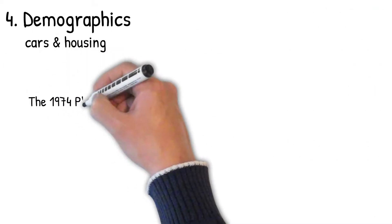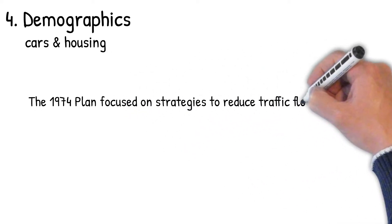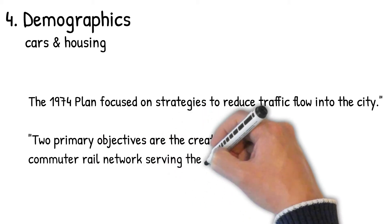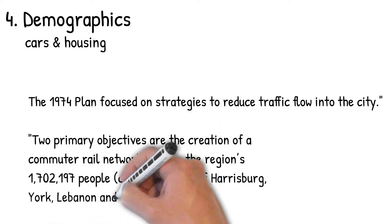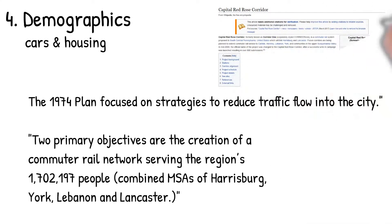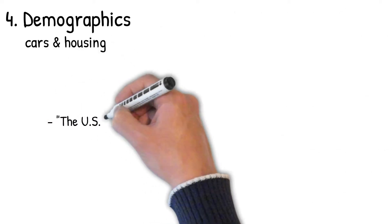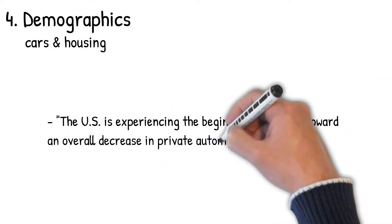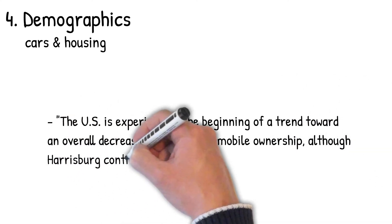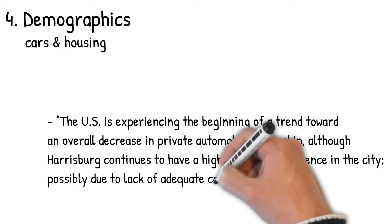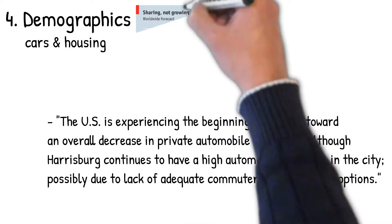The end of the sidebar looks at the 1974 plan focused on strategies to reduce traffic flow in the city. There are two primary objectives in the creation of a commuter rail network serving the region's 1.7 million, and that's a combined MSA of Harrisburg, York, Lebanon, and Lancaster. The quote pulled from the comp plan: The U.S. is experiencing the beginning of a trend towards an overall decrease in private automobile ownership, although Harrisburg continues to have a high automobile presence in the city, possibly due to a lack of adequate community transportation options.